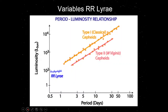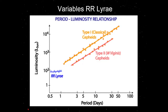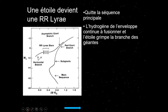Les RR Lyrae ont toutes à peu près la même luminosité intrinsèque — c'est ce qui les distingue des céphéides. Les céphéides ont une luminosité directement liée à leur période d'oscillation (quelques jours), et il en existe deux familles. Les RR Lyrae ont des périodes beaucoup plus courtes (quelques heures) et une luminosité intrinsèque quasi-constante. Cela leur permet de servir de chandelles standards pour mesurer des distances par photométrie. L'étoile devient une RR Lyrae quand elle traverse le gap d'instabilité lors de son évolution, puis repart en branche horizontale avant de finir en naine blanche.